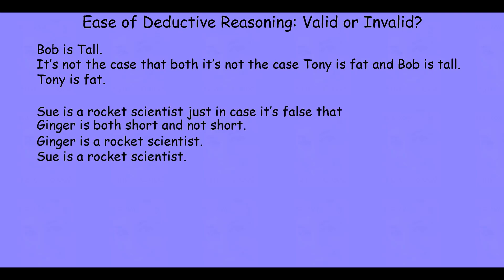Let's take a look at a second one. Premise: Sue is a rocket scientist, just in case it's false that Ginger is both short and not short. Premise: Ginger is a rocket scientist. Conclusion: Sue is a rocket scientist. Again, you can pause the video if you want and make a judgment about whether or not this is a valid deductive inference — if those first two sentences are true, does it mean the conclusion has to be true as well?